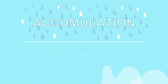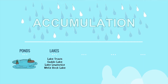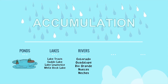Accumulation. Water falls back to the earth and it has to accumulate somewhere. Some of the places that you can find liquid water on earth would include ponds, lakes — if you live in Texas, you've probably heard of Lake Travis, Caddo Lake, Lake Louisville, or White Rock Lake. Or rivers — here in Bastrop, Texas, the Colorado River runs right through the downtown of the city. You also have the Guadalupe River where you can go tubing, the Rio Grande, the Nueces in Corpus Christi, and the Natchez River in Beaumont.